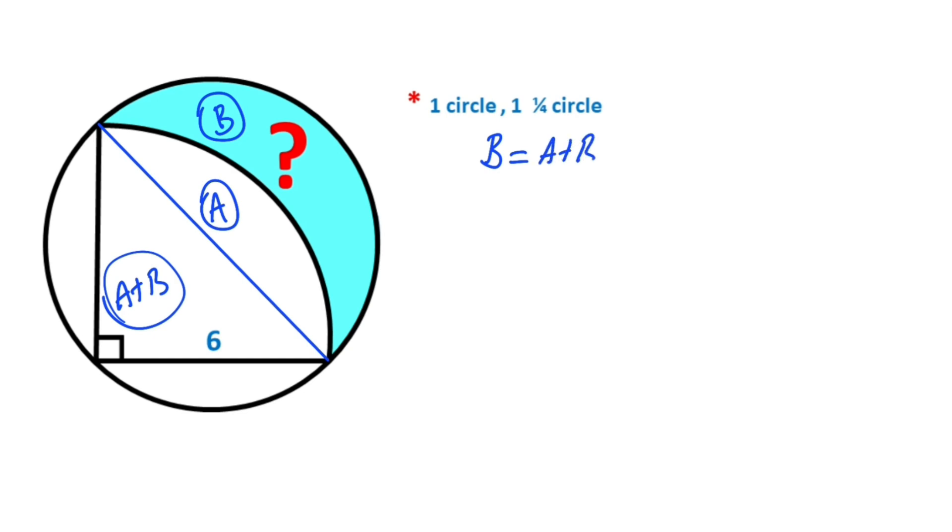So region B equals A plus B minus A. Therefore, let's write here: A plus B equals semicircle area minus region A.